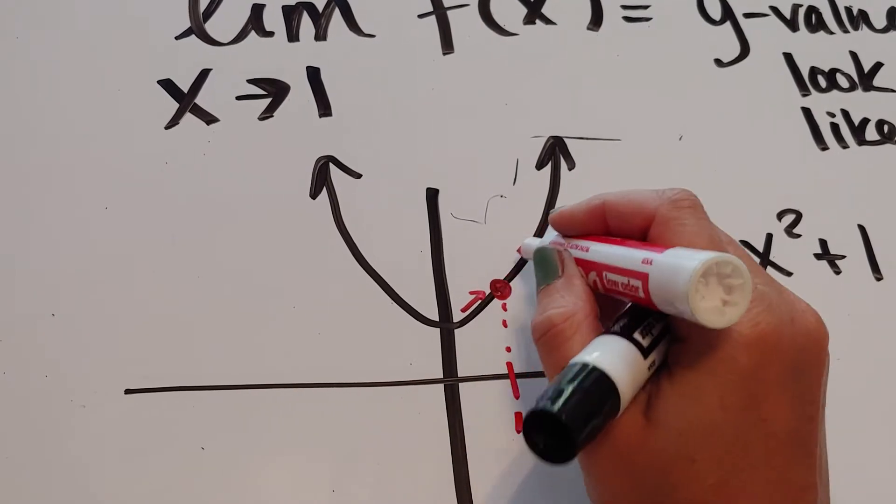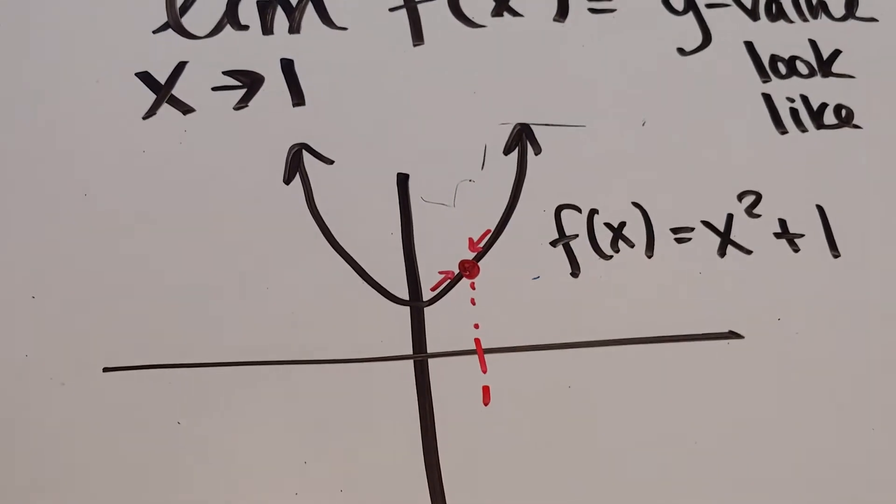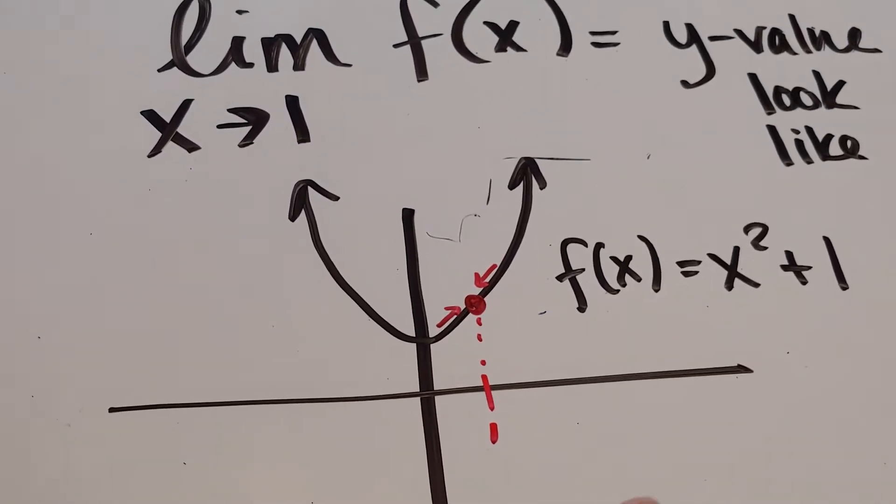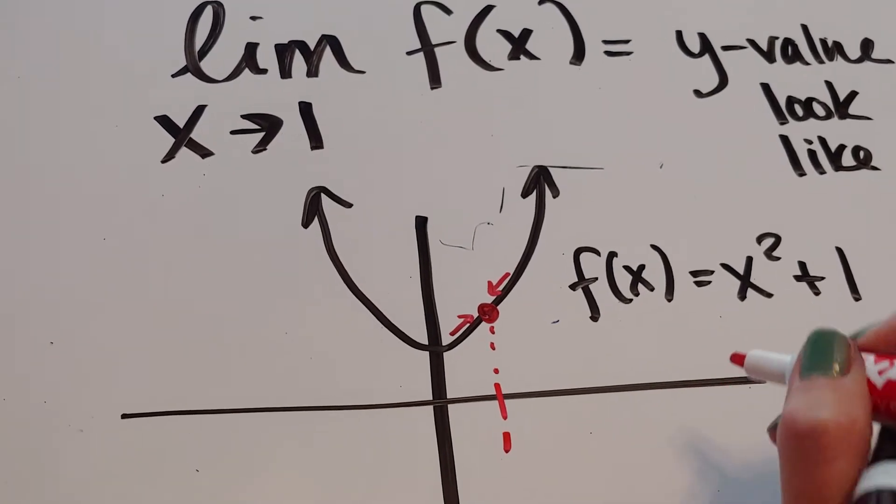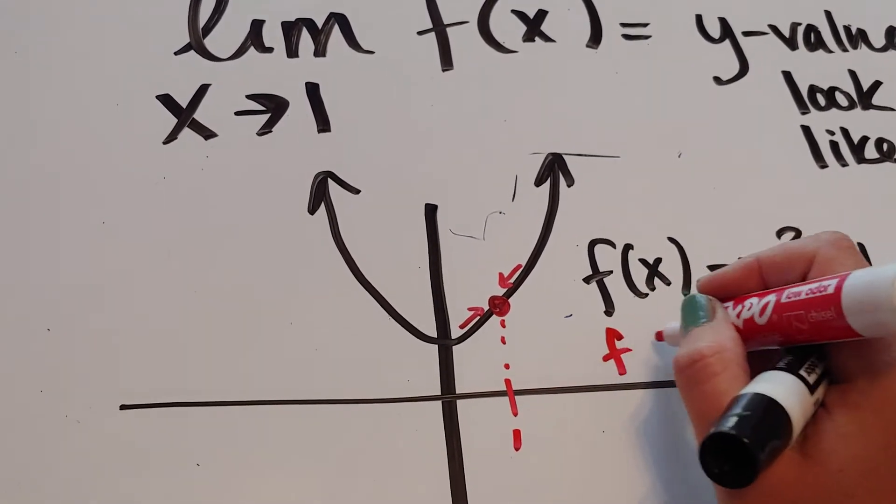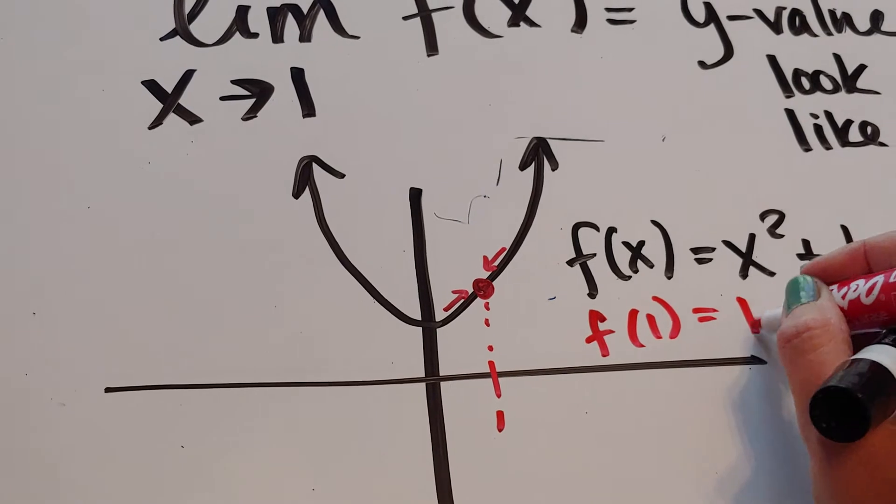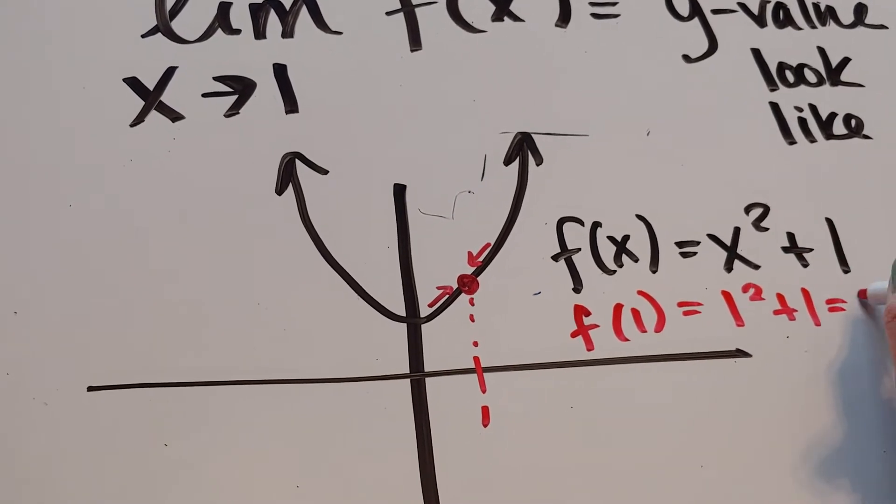So, I'd walk on this side. I'd walk on this side and be like, hey, what y value do I think I'm going to on this road? And the y value that I think I'm going to on this road is the y value 2.